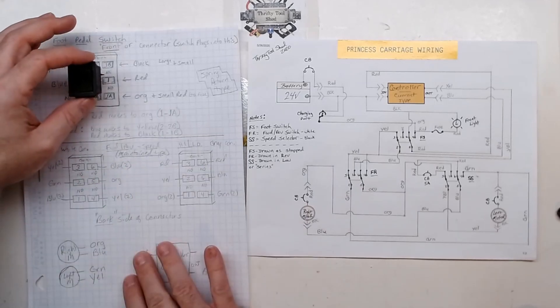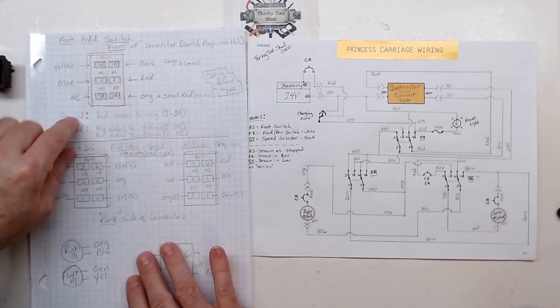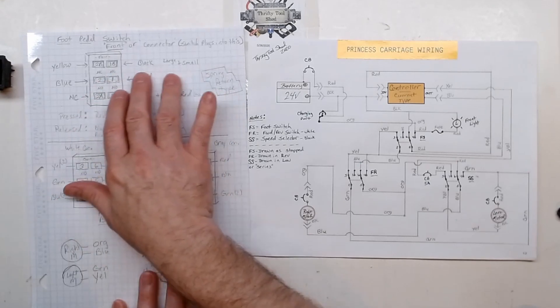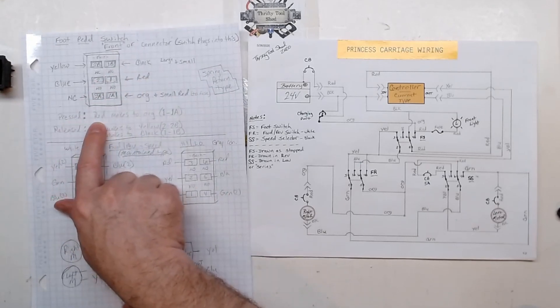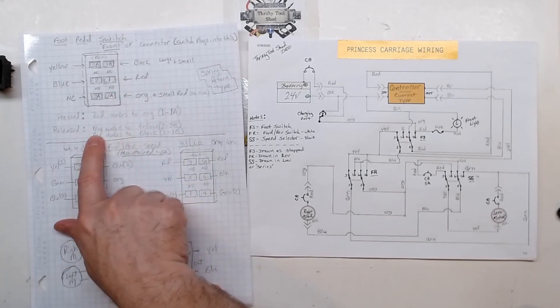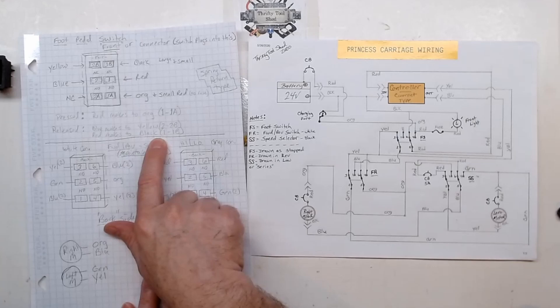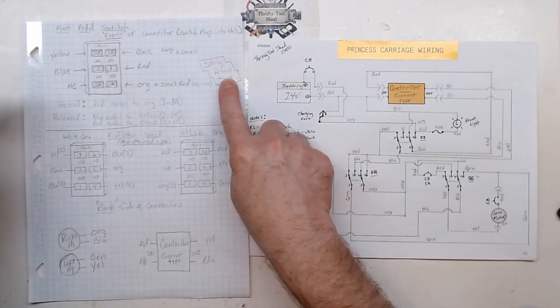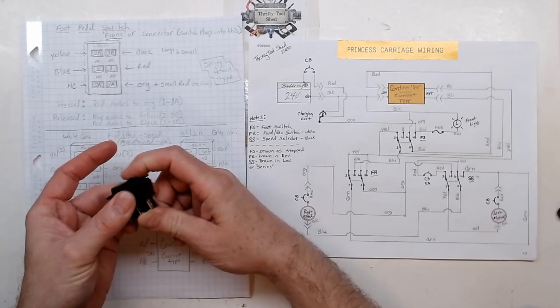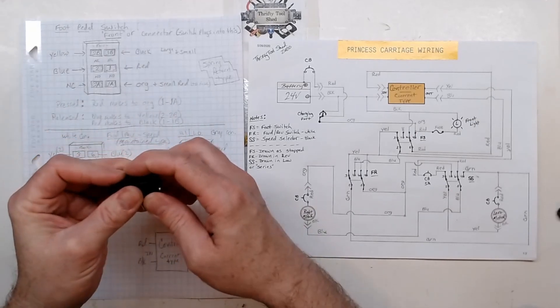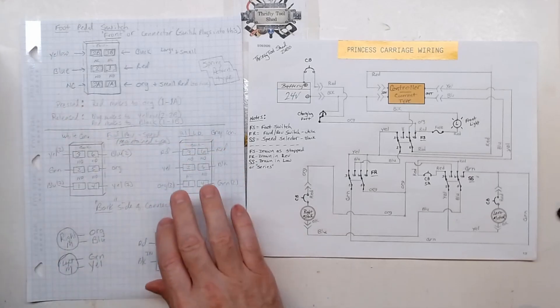I show here the face of that connector with wires accordingly. When pressed, red makes with orange (1 to 1a). When released, blue makes to yellow and red makes to black. This is a spring return type switch.